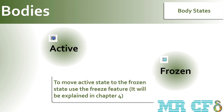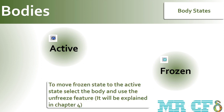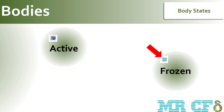Active bodies can be sliced and the resulting bodies are frozen automatically. To move all active bodies into the frozen state, use the freeze feature. Active bodies are displayed in blue in the tree outline. The body icon in the tree outline is dependent on its type: solid, surface, or line. A frozen body is immune to all modeling operations except slicing. Hidden and suppressed bodies are not frozen.